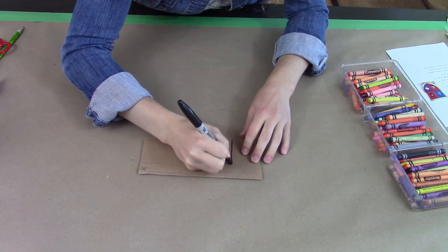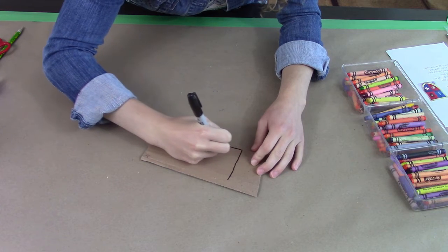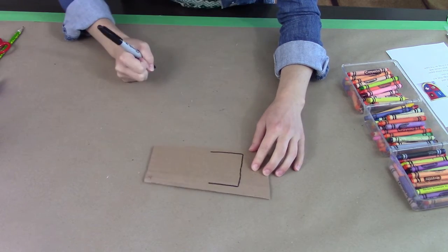So to draw the shield shape I'm just going to start by drawing a straight line across the top of my cardboard. Then I'm going to draw two straight lines extending down as if I was going to make a square.